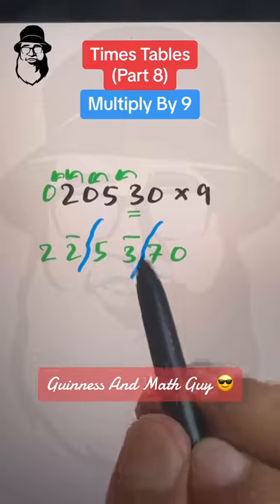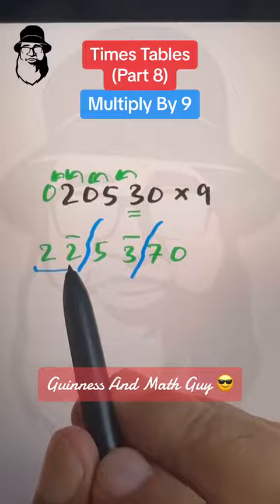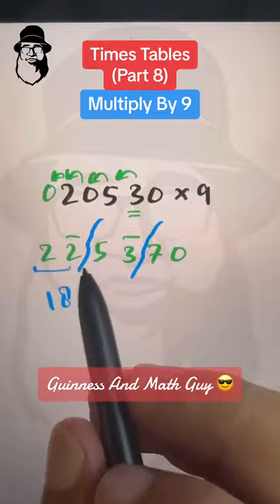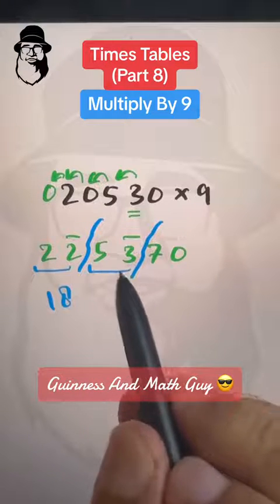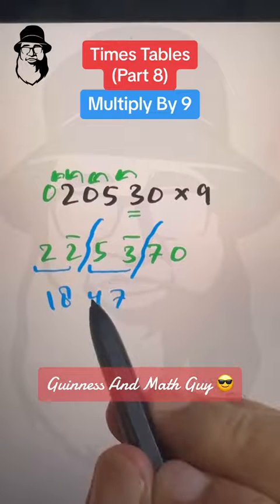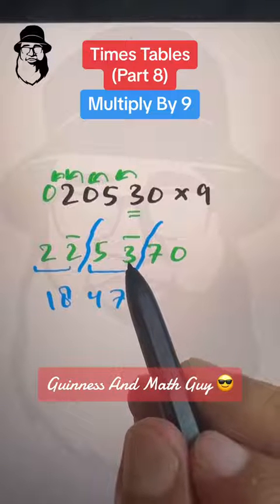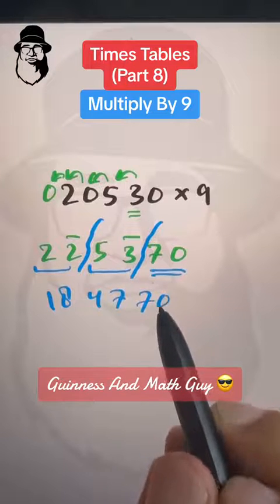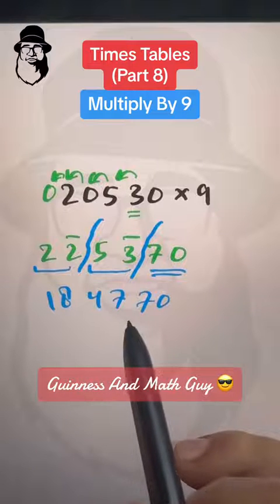You can just mentally do it. This means 20 minus 2, that is 18 — or we decrease 1 from this 2 and apply 'all from 9 and the last from 10' on bar 2, giving the same result. This means 50 minus 3, that is 47 — or decrease 1 from 5 to get 4 and apply the formula on 3 to get 7. And 70 we write as it is. So 20530 times 9 is 184770.